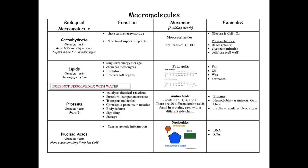The monomers for proteins are amino acids — there are 20 amino acids in the body, each differing based on the R group or side chain. They all contain carbon, hydrogen, oxygen, and nitrogen. Examples include enzymes, hemoglobin, and insulin. Nucleic acids carry genetic information; their monomers are nucleotides, and each nucleotide contains a phosphate group, a nitrogenous base, and a five-carbon (pentose) sugar. Examples are DNA and RNA.